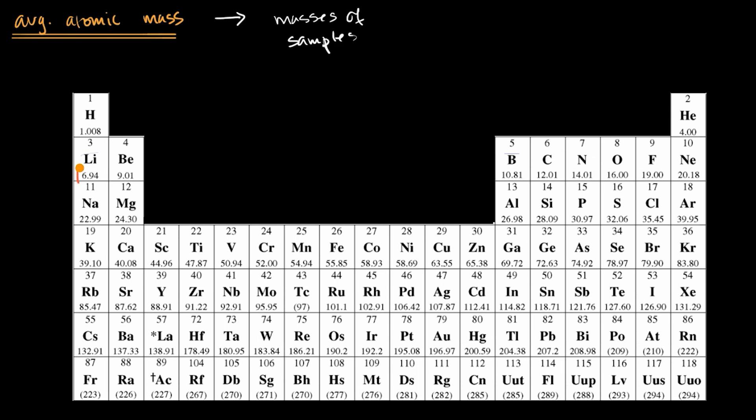So say lithium. We know its average atomic mass is 6.94 unified atomic mass units per atom of lithium. What if there were a certain number of atoms of lithium such that if I have that number, times a certain number of atoms, then I will actually end up with 6.94 grams of lithium.